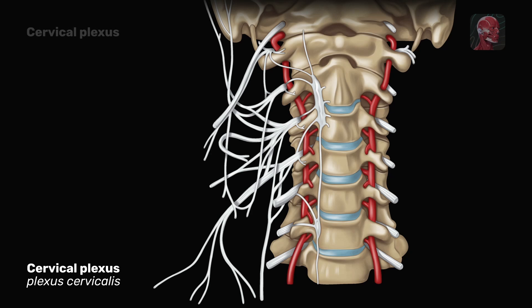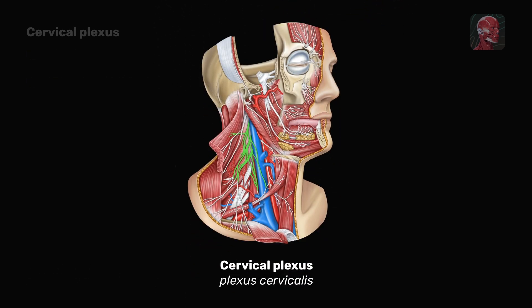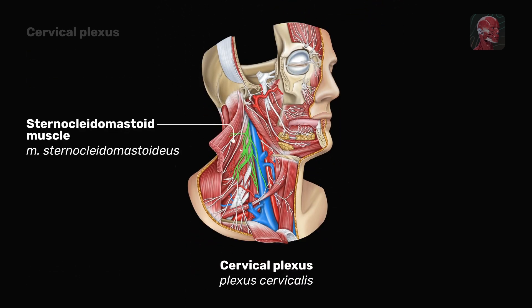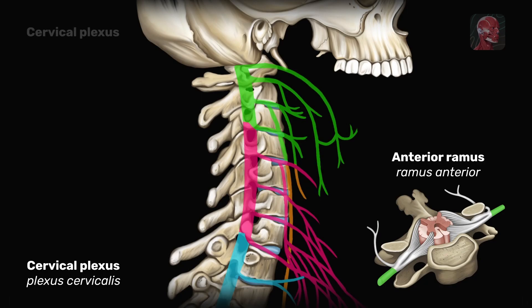In this video, we are going to discuss the anatomy of the cervical plexus, which provides innervation to the head and neck. This plexus is located in the neck region deep to the sternocleidomastoid muscle and anterolateral to the levator scapulae. It is formed by the anterior rami of the four upper cervical spinal nerves. The fifth cervical nerve is sometimes also considered as part of the plexus due to its contribution in the formation of one of the deep branches of the cervical plexus, the phrenic nerve.